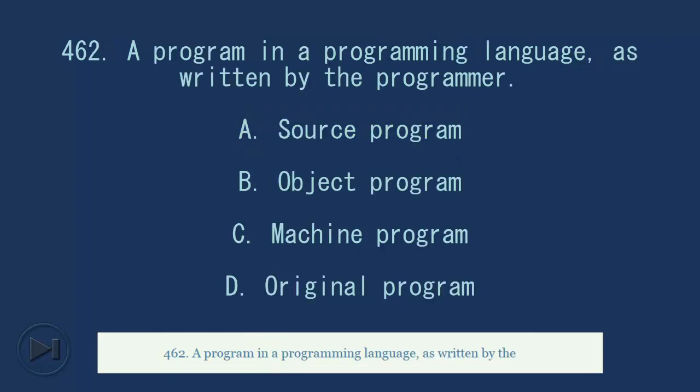462. A program in a programming language, as written by the programmer. A. Source program. B. Object program. C. Machine program. D. Original program. Answer, A. Source program.